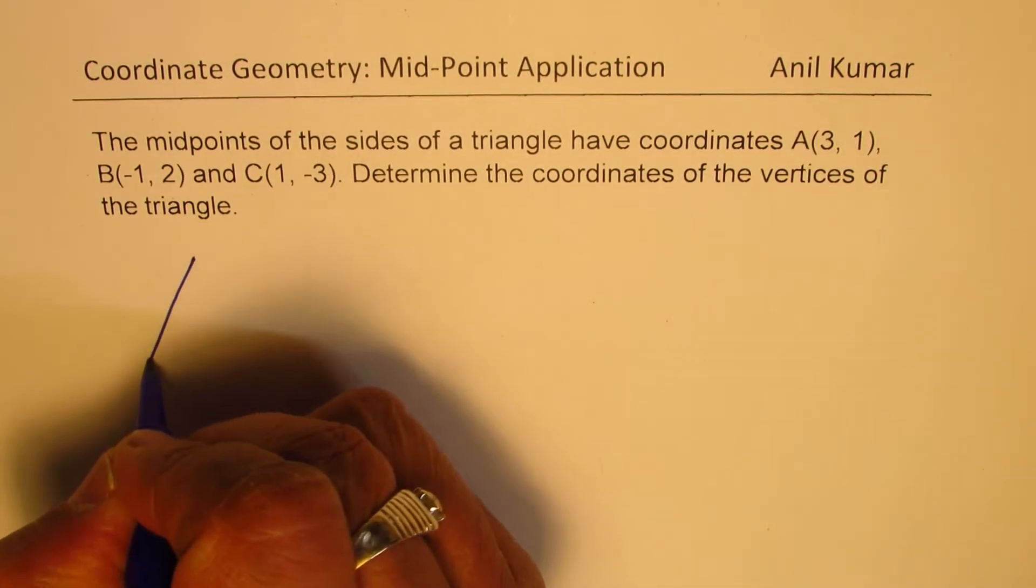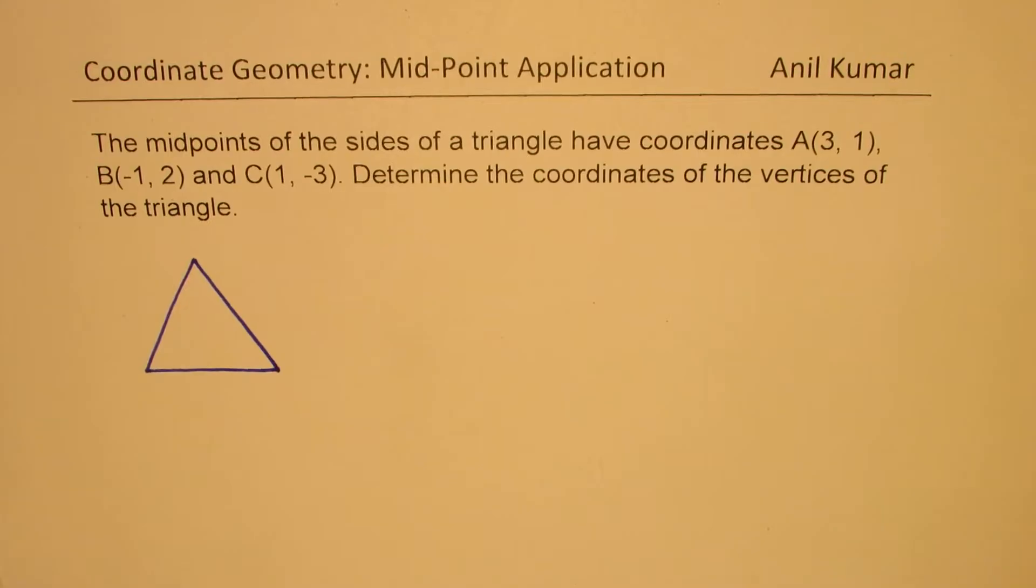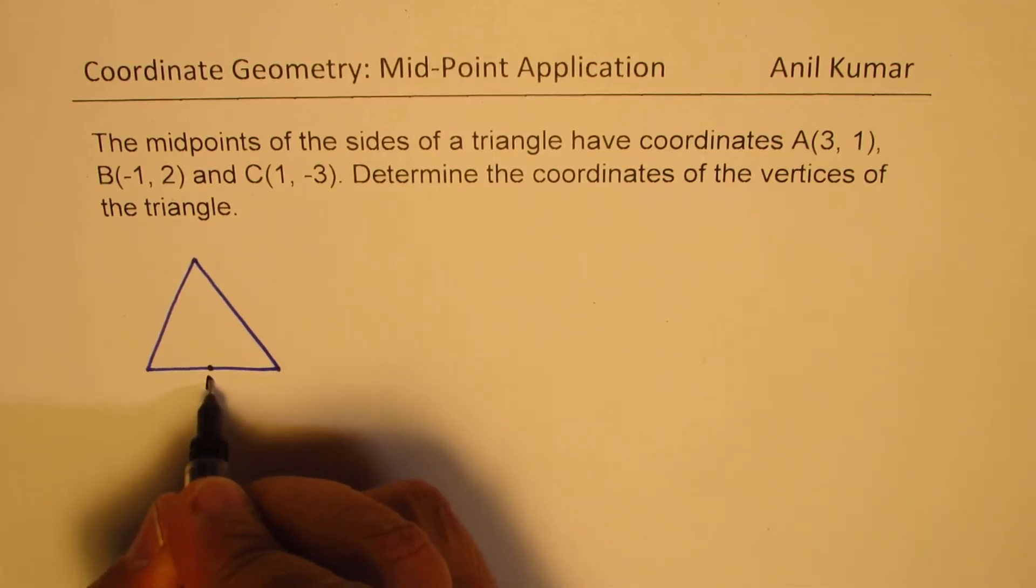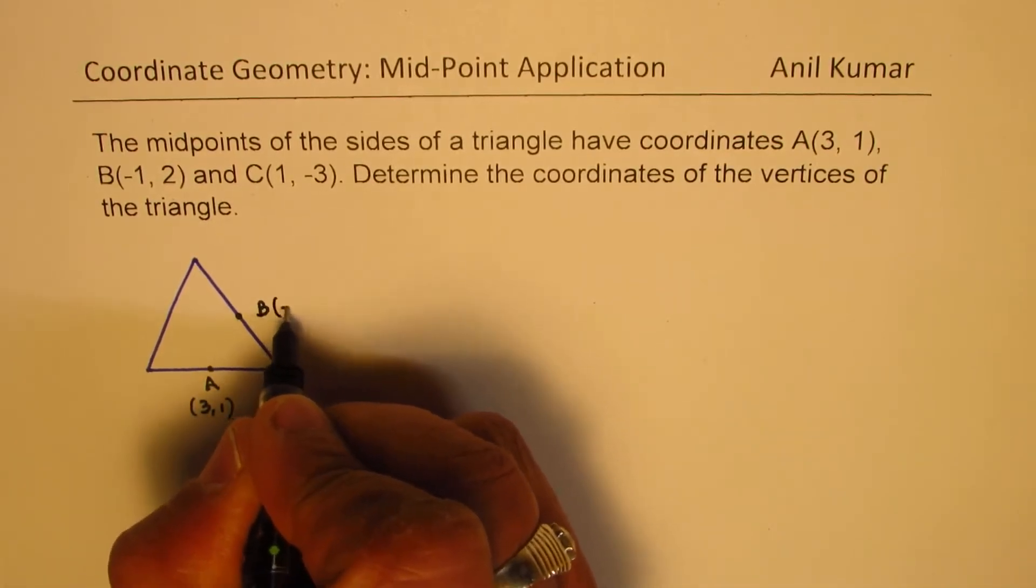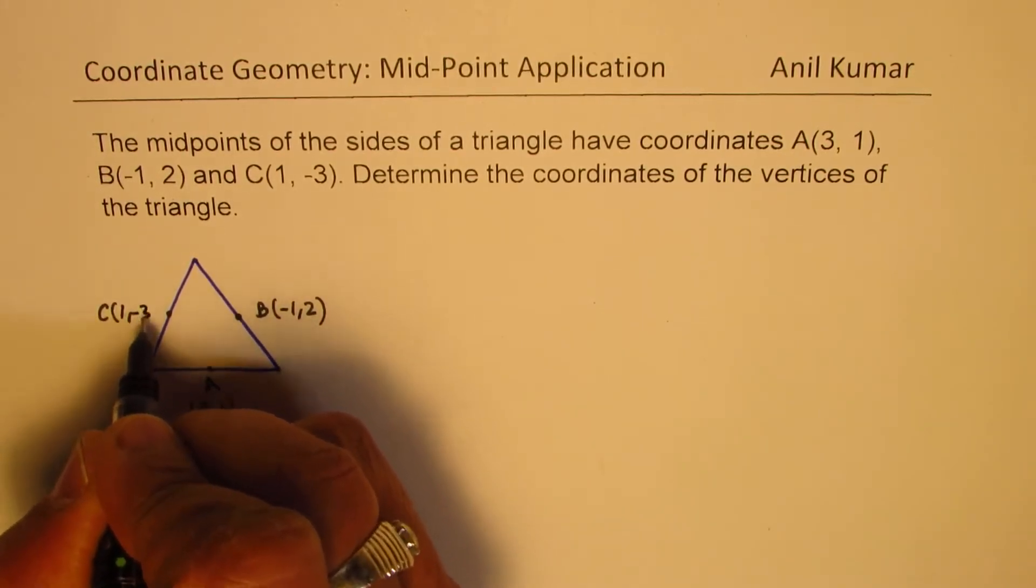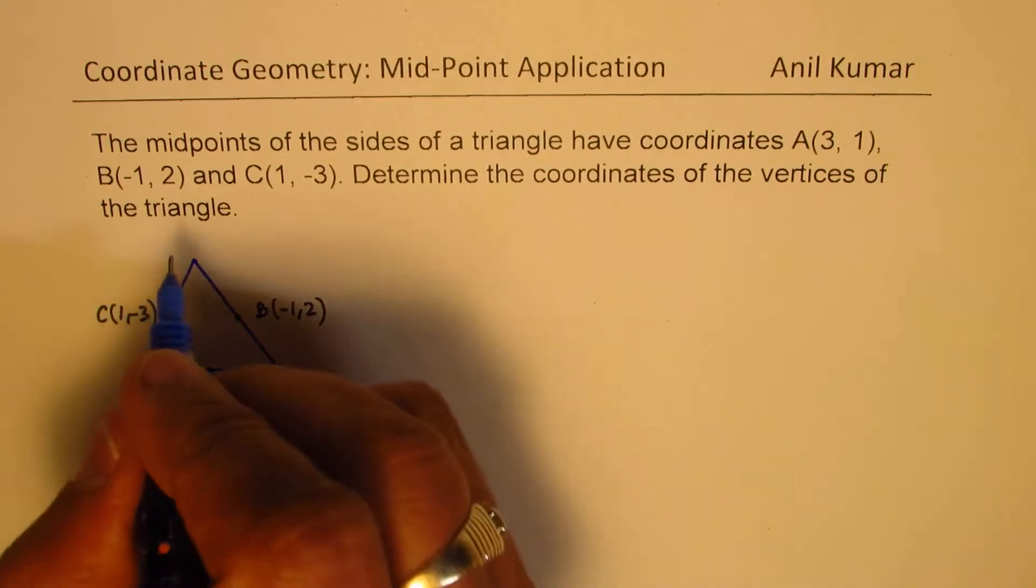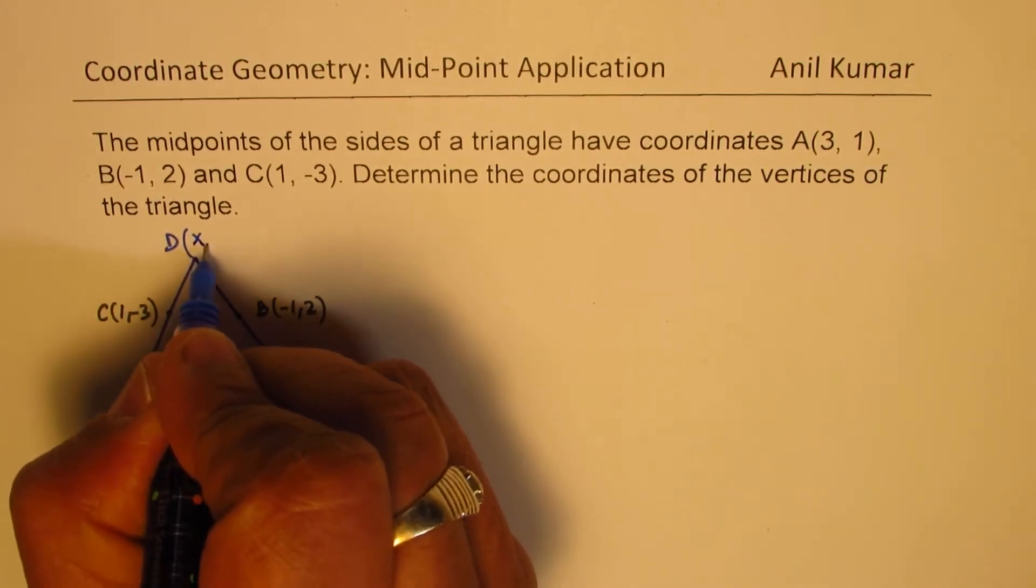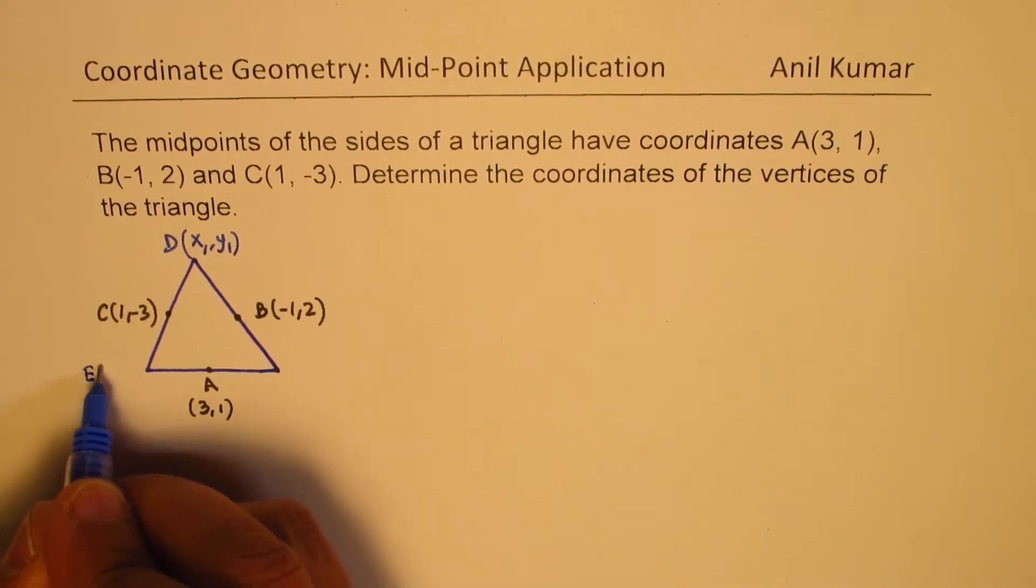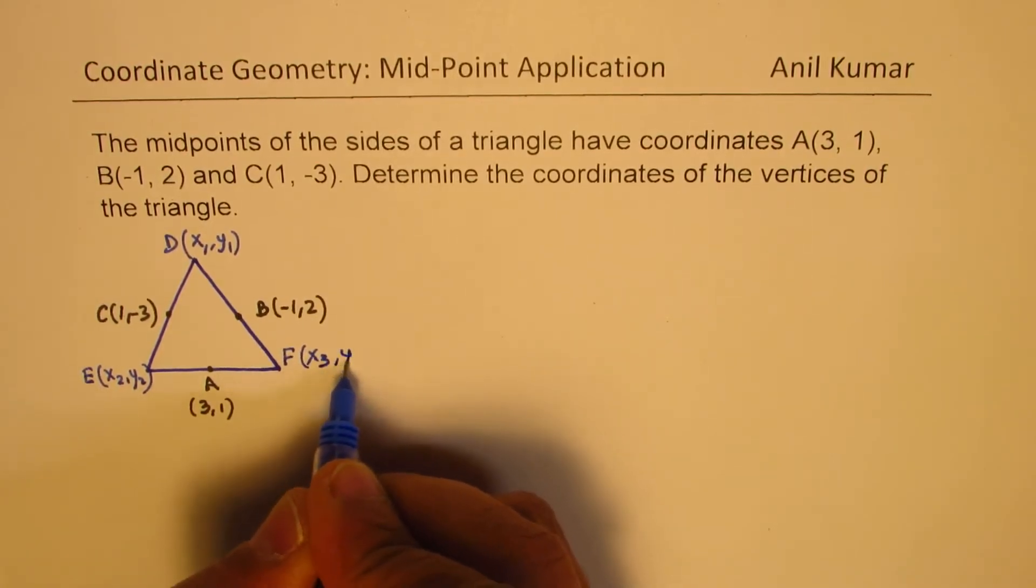So let's sketch the triangle first and then we'll work on this. Let us say that's the triangle whose midpoints are given to us. So midpoints let's say A is given to us as (3,1), B is (-1,2), and C is (1,-3). We need to find the vertices that is D, E, and F. So let this be D, we can call this as (x₁,y₁), E(x₂,y₂), and F(x₃,y₃).